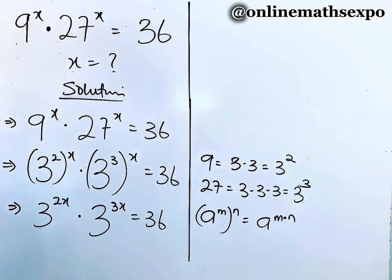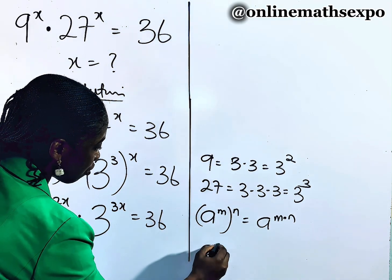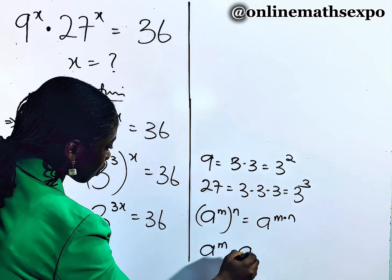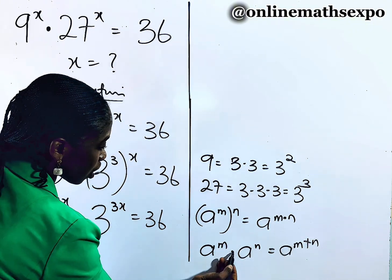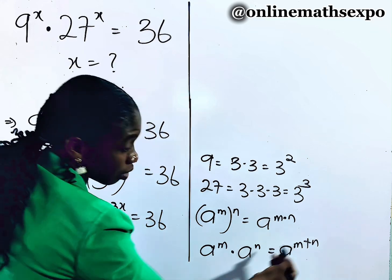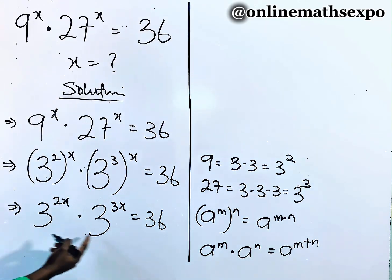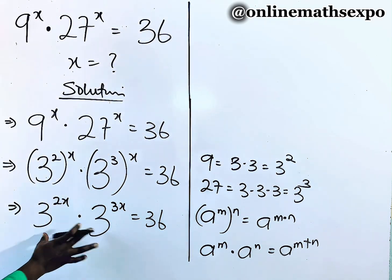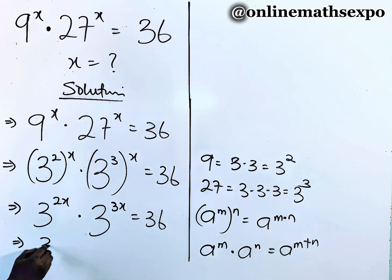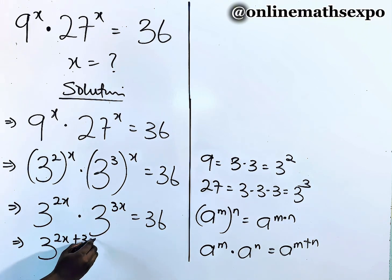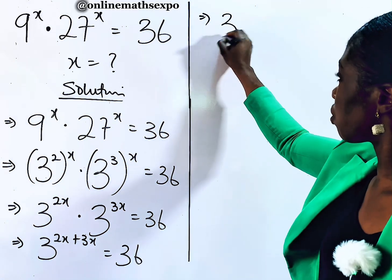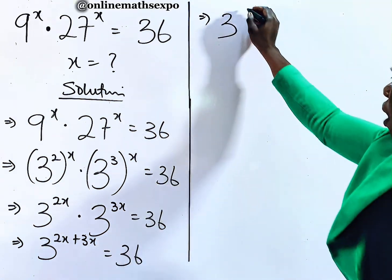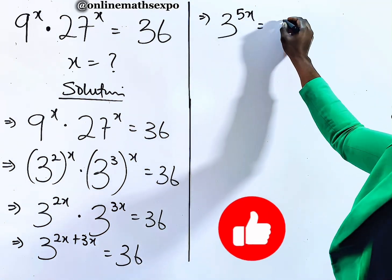Now at this point, you just need to remember that for every a to the power of m multiplied by a to the power of n, it equals a to the power of m plus n. Multiplication comes to addition of the powers. So you see that these two bases are the same, giving us 3 to the power of 2x plus 3x, which simplifies to 3 to the power of 5x equal to 36.